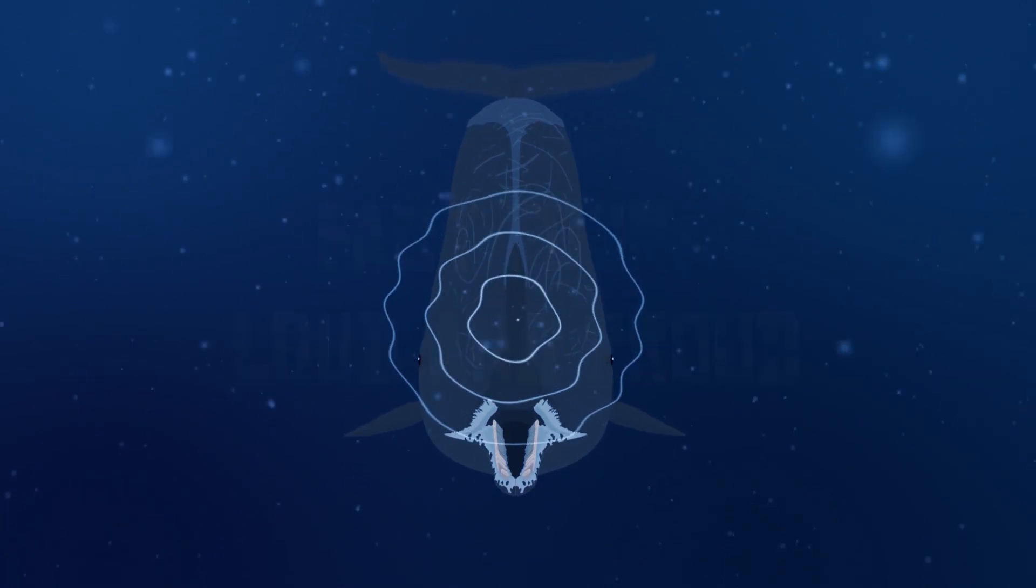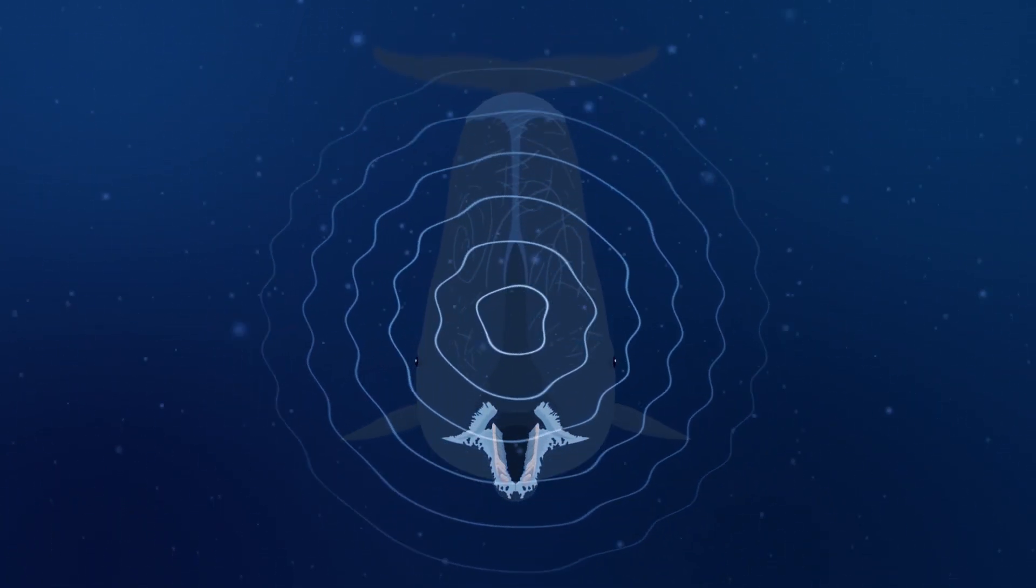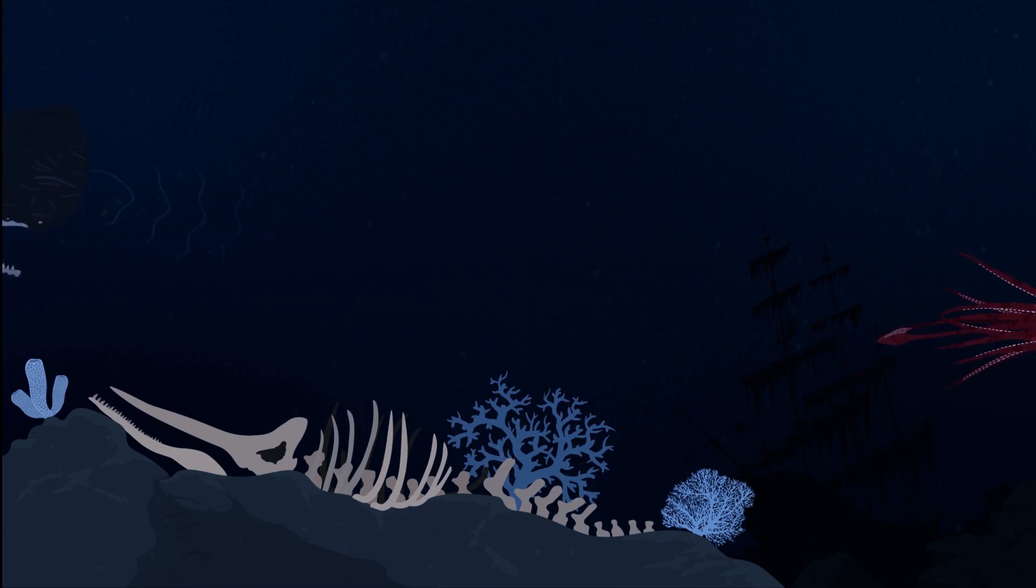Sperm whales are the loudest animals alive, producing clicks of up to 230 decibels. Sperm whales primarily hunt in the twilight zone of the oceans, where very little to no light reaches. Thus, these animals rely on echolocation to locate their prey. By emitting these high-pitched clicks and listening to the echoes as they bounce off of objects, sperm whales are able to locate their prey items within the dark oceans.